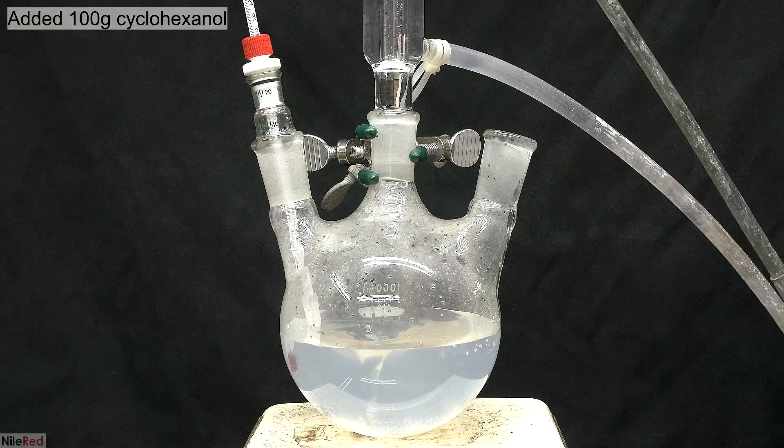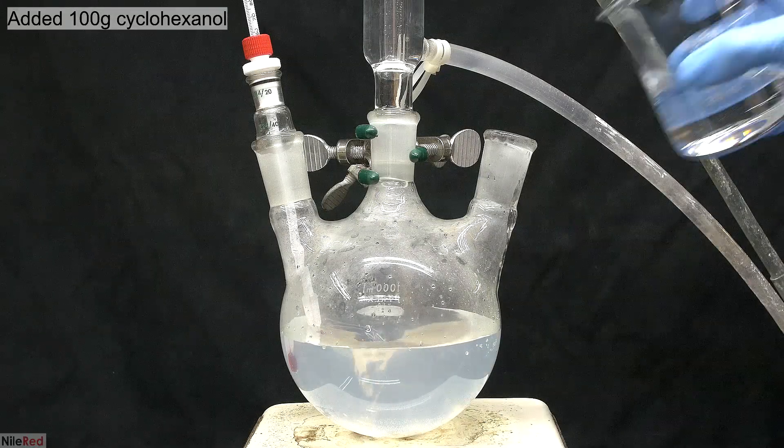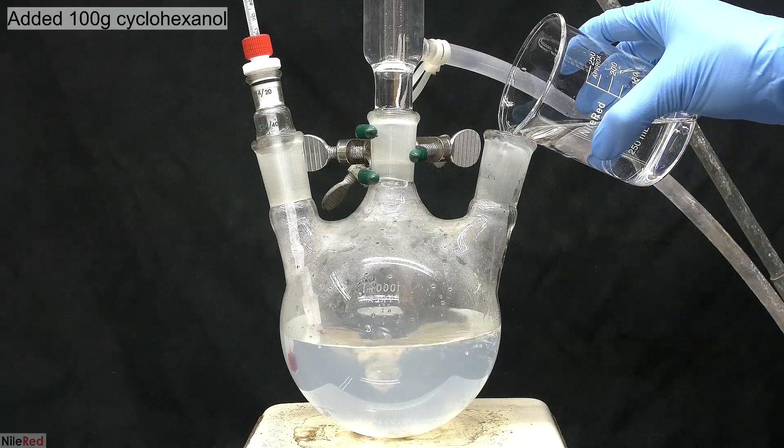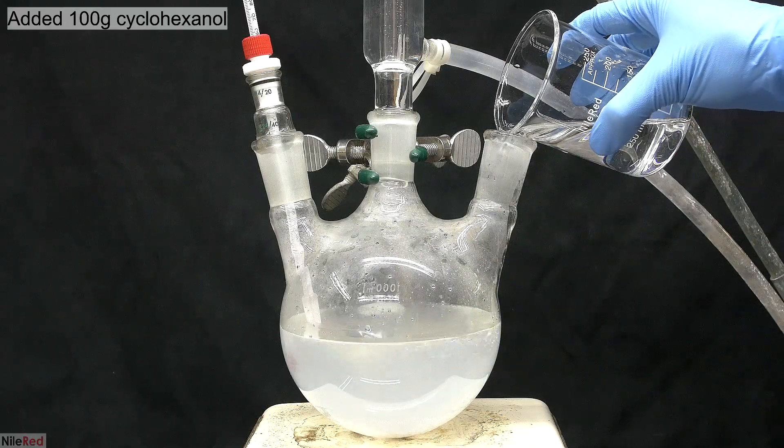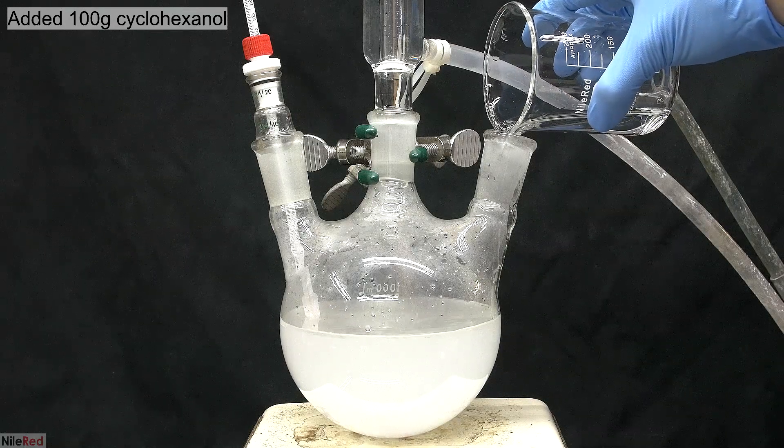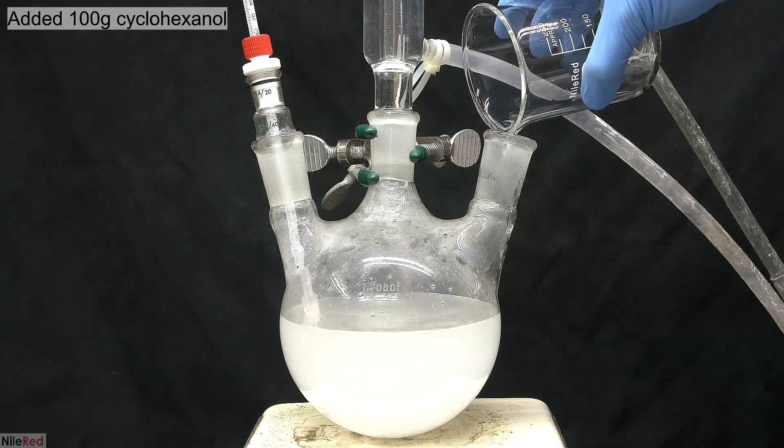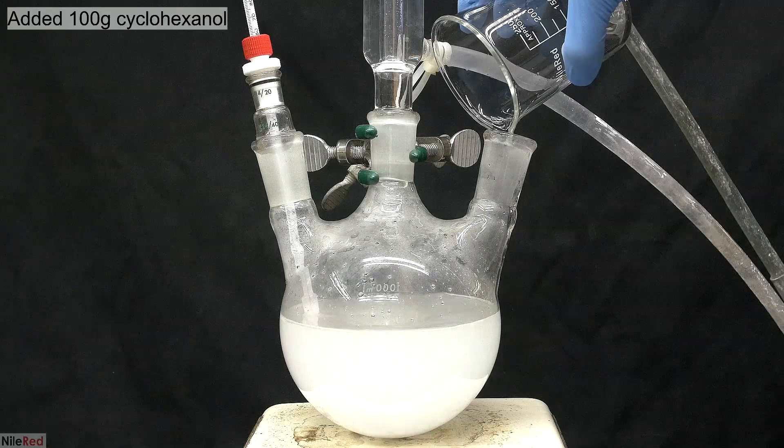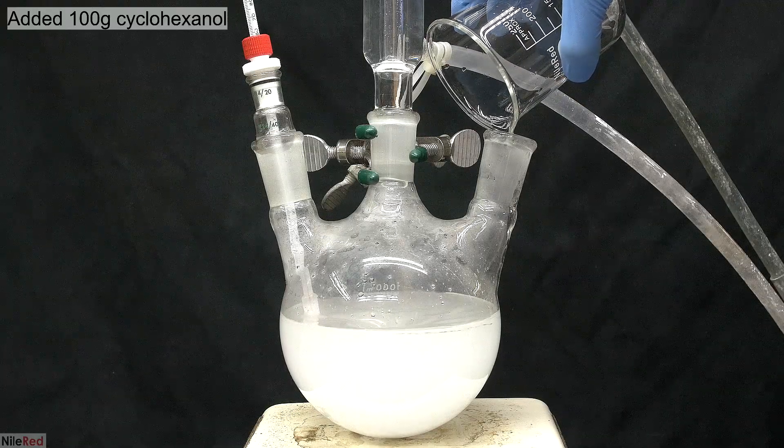With the catalyst, and all of the hydrogen peroxide loaded in the flask, it's time to add the cyclohexanol. With strong stirring, I pour in about 100 grams, and the solution quickly becomes white. Cyclohexanol is not very soluble in water, so with the stirring, we get a very fine and opaque dispersion.